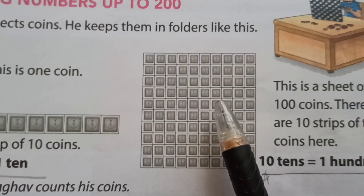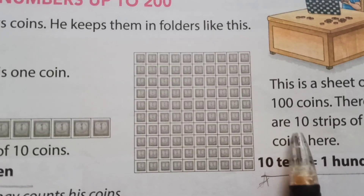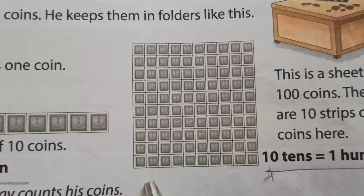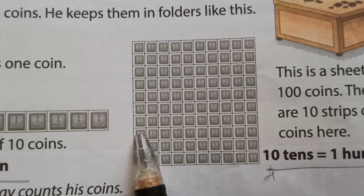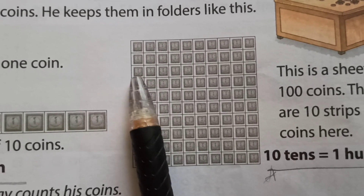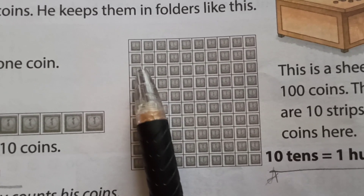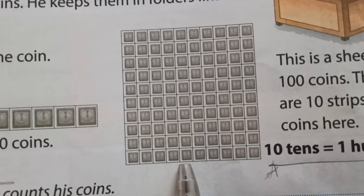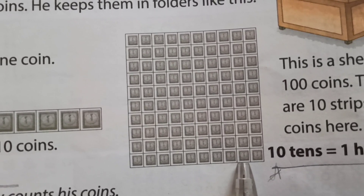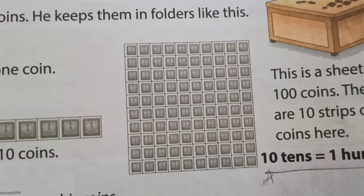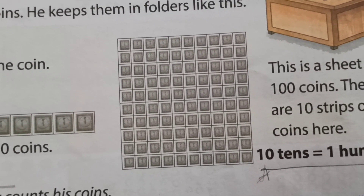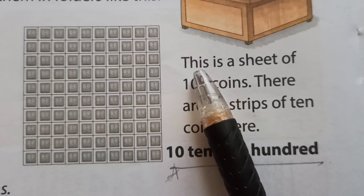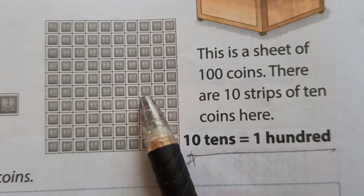See here — how many strips are there? Let's count: 1, 2, 3. Each strip has how many coins? 1, 2, 3, 4, 5, 6, 7, 8, 9, 10. And how many 10s here? Let's count: 1, 2, 3, 4, 5, 6, 7, 8, 9, 10. Ten strips — meaning 10 tens. This is a sheet of 100 coins.